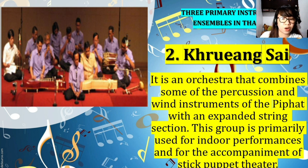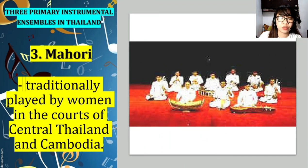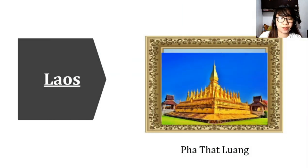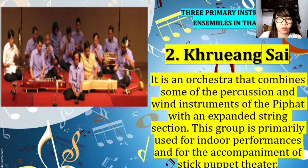The second ensemble is the Khruang Sai — an orchestra that combines some of the percussion and wind instruments of the Piphat with an expanded string section. It is primarily used for indoor performances and as a component of stick puppet theater. The third ensemble is the Mahori, traditionally played by women in the royal courts of central Thailand and Cambodia, usually performing for kings and queens.